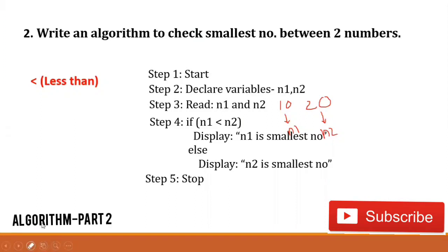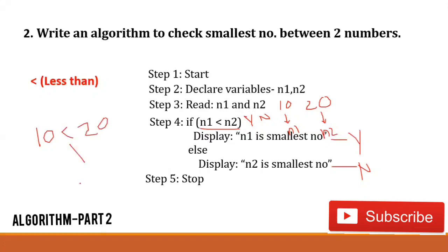The condition n1 less than n2 will always answer either yes or no. If yes, the display after if will be printed. If no, the display after else will be printed. Let's check with our values: n1 is 10 and n2 is 20. Is 10 less than 20? Yes it is. The answer is yes, so the display after if is printed — that is, 'n1 is the smallest number.' The value of n1 is 10, which is the correct answer: out of 10 and 20, 10 is the smallest number.